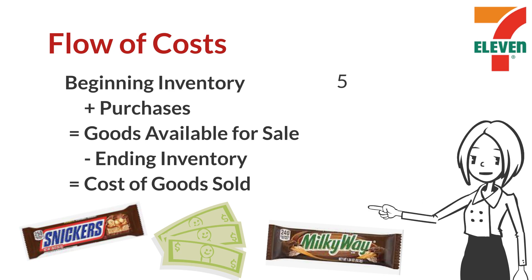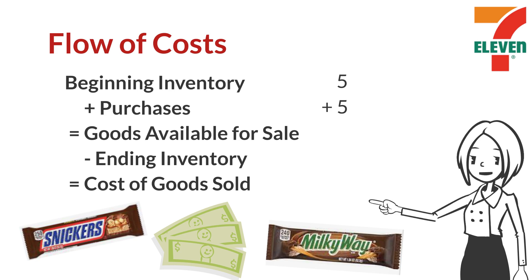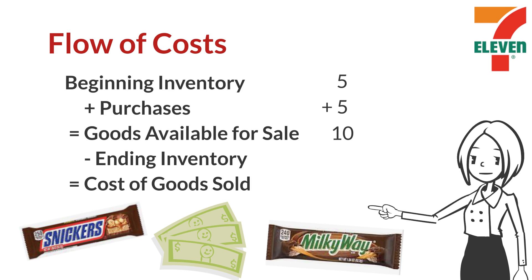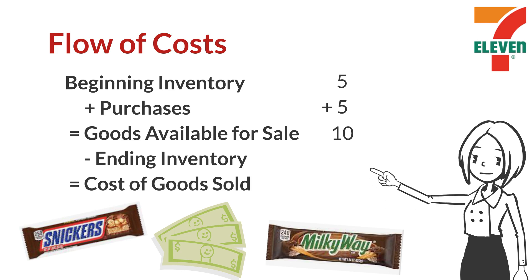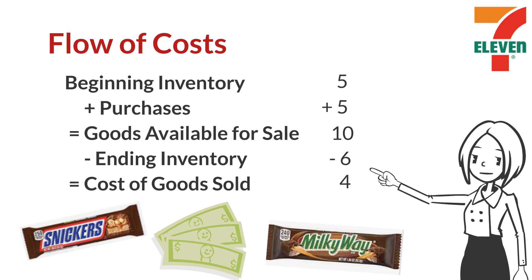That represents our beginning inventory. During the period, we purchased an additional five candy bars, so we now have 10 candy bars available for sale. My top performers are asked to buy a candy bar, so I sell four candy bars, which leaves six in my inventory.